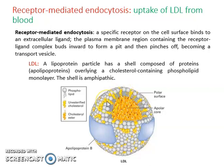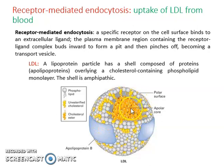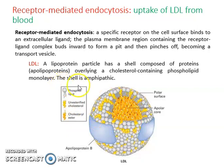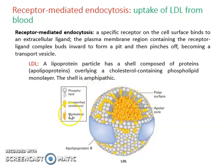Inside, there is an apolar core because it contains lipids: cholesterol esters and triglycerides. Thus the shell is amphipathic — the outside is polar and the inside is apolar.